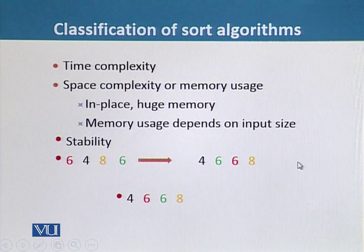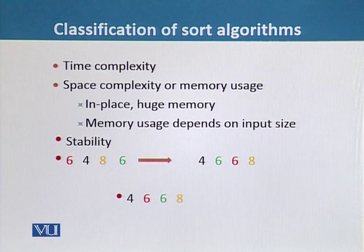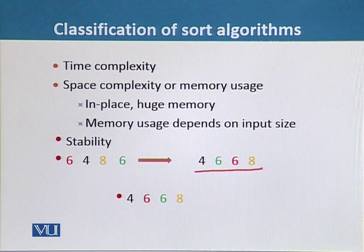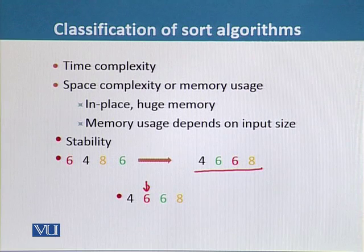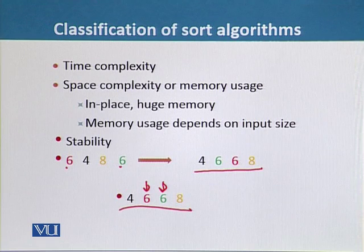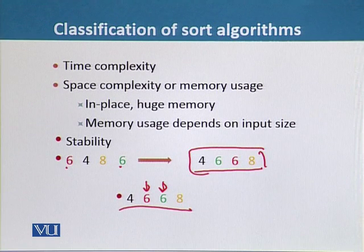Stability of the sorting algorithm means that we should get the red colored 6 before the green colored 6, because in the original array the red 6 was placed before the green 6. If we get this type of sorting, we can say the algorithm is stable. With reference to the original order, the other result is not the correct one.